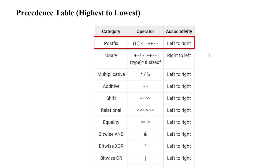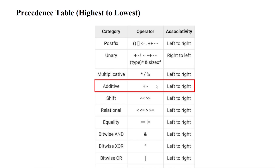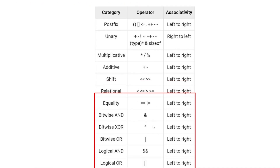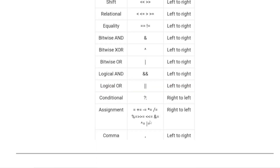The highest ranking operators are postfix operators and parentheses. We also have unary operators, then multiplicative operators — that is multiplication, division, and modular division. Then additive — addition and subtraction. Then shift, relational, equality, bitwise, and logical operators. The lowest precedence is for the comma operator.